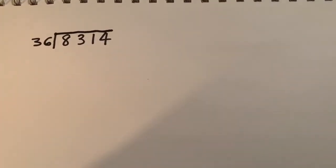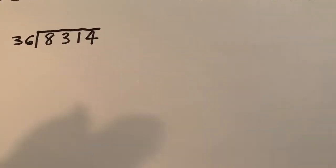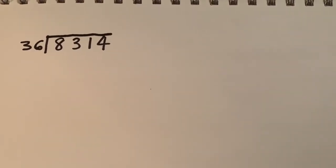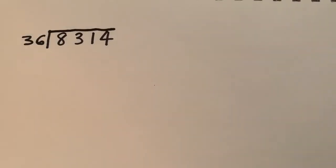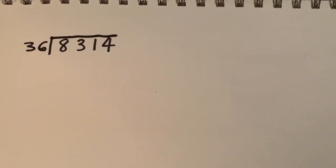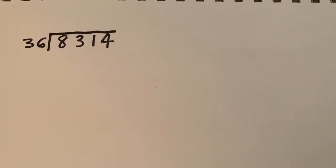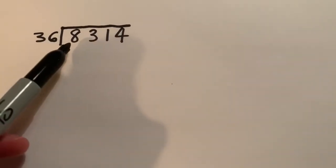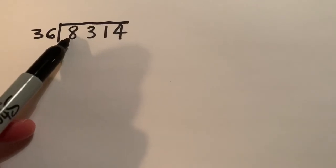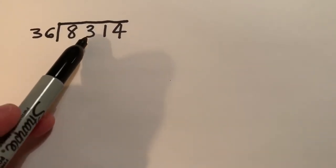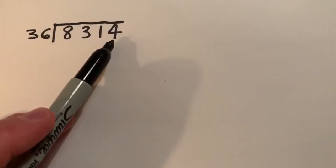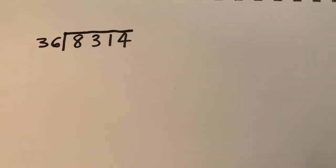Okay guys, we'll have a go at another long division, but this time there will be a remainder and there will be a little bit more calculation to do than there was on the first example. So we've got a dividend of 8,314 and a divisor of 36.